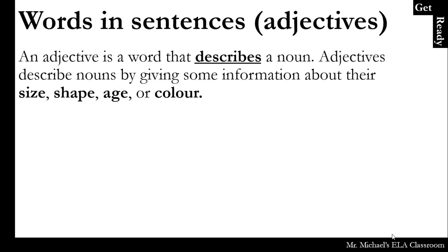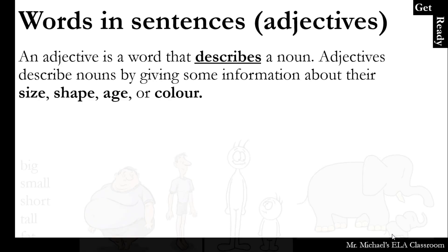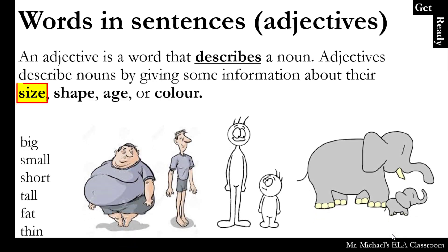Words and sentences — adjectives. An adjective is a word that describes a noun. Adjectives describe nouns by giving some information about their size. For example: big, small, short, tall, fat, or thin.